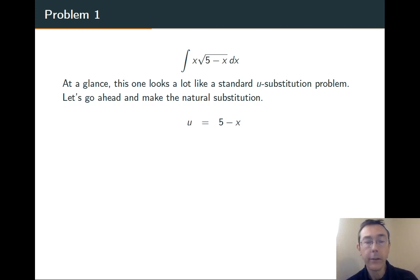Because there's a clear inside function here, 5 minus x. So let's set that equal to u and just kind of see what happens. Once we've picked our u, we differentiate and solve for dx. dx equals negative du.